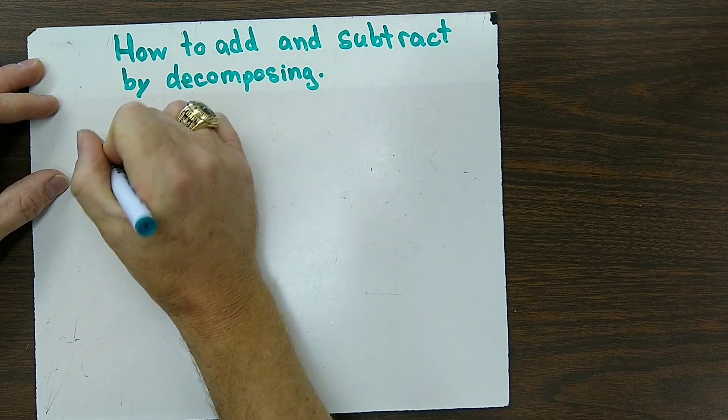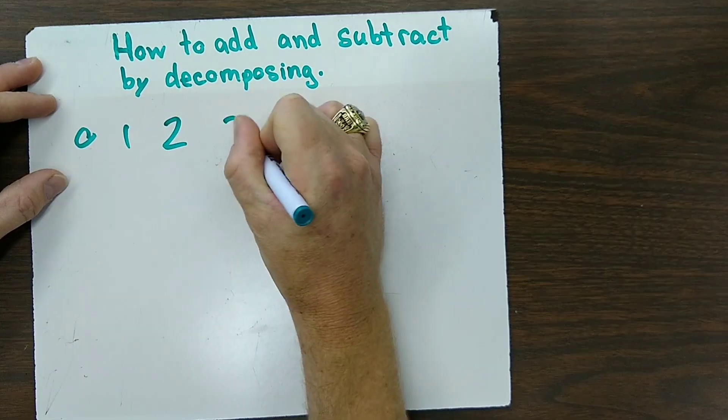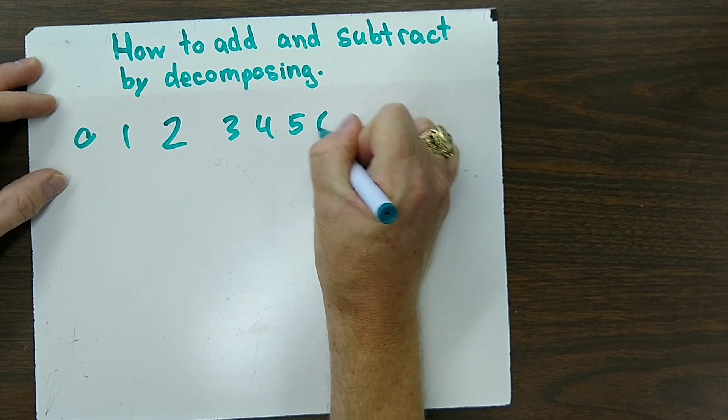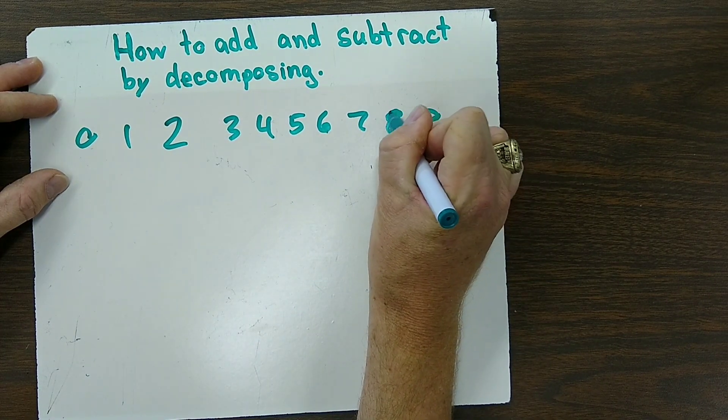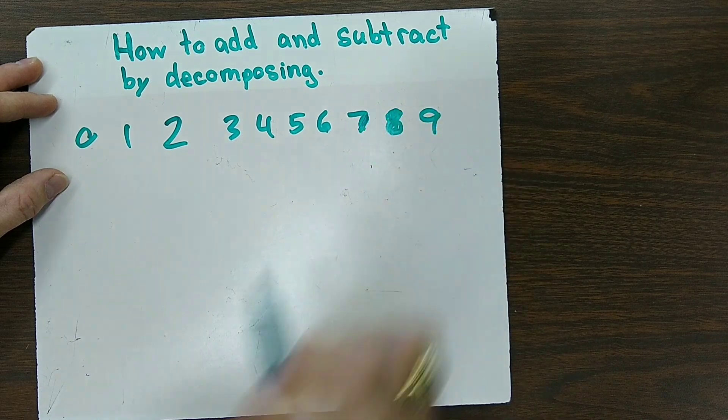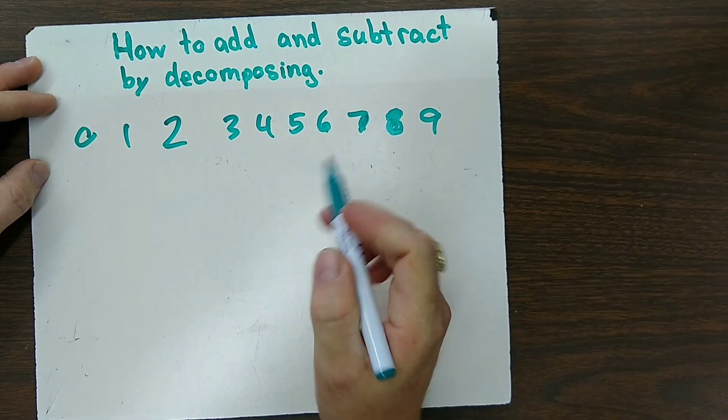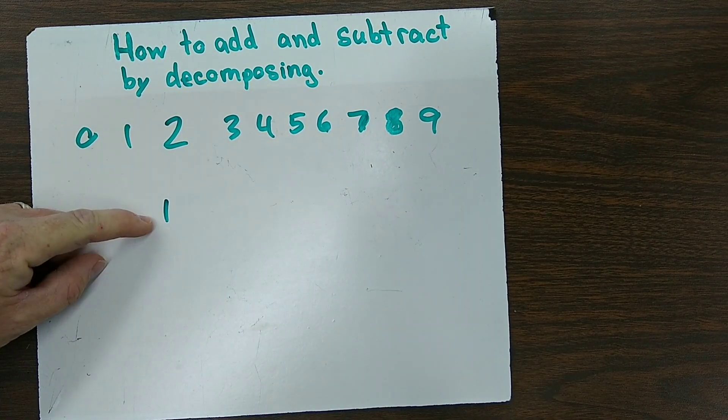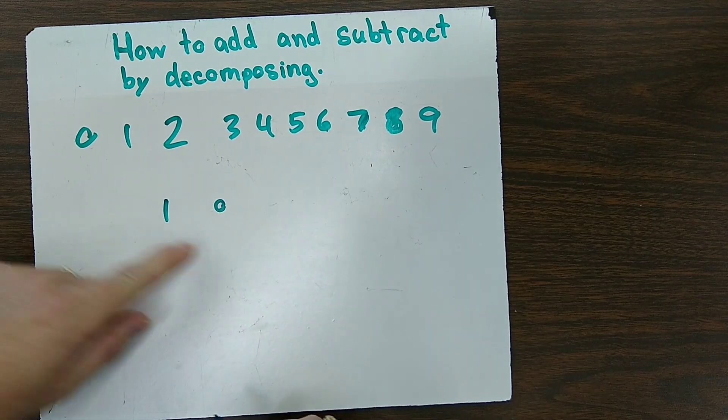First off, we know that 0, 1, 2, 3, 4, 5, 6, 7, 8, and 9, those are all one digit numbers. Those are all our digits. So whenever you have just one of them, it's worth just that much. So that's just one.